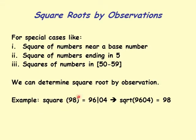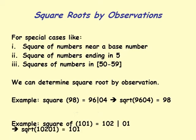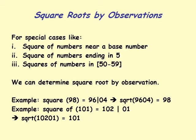Example: square of 98 is 9604, so the square root of 9604 must be 98. Square of 101 is 10201, so square root of 10201 is 101.